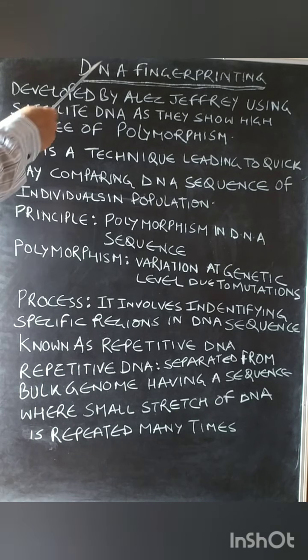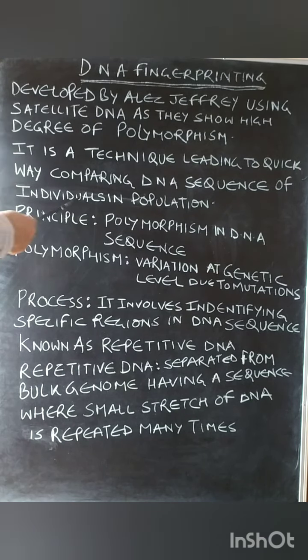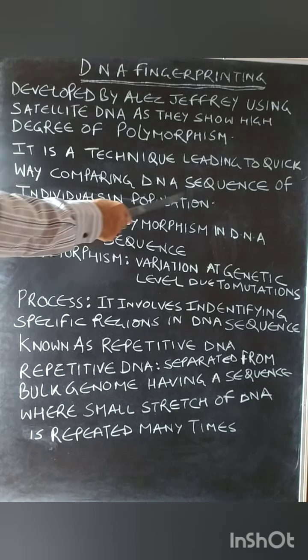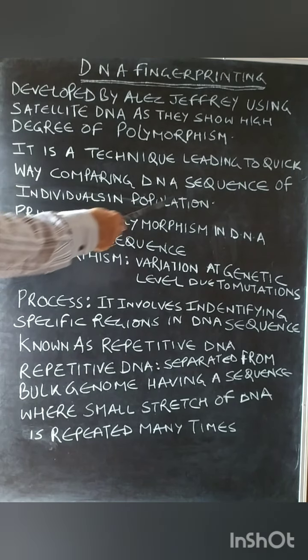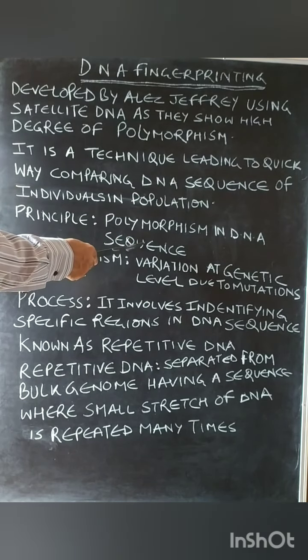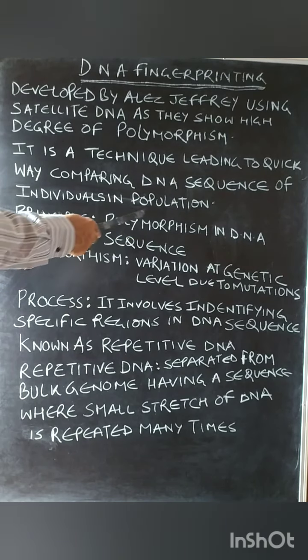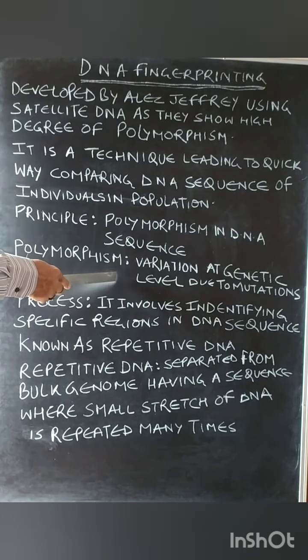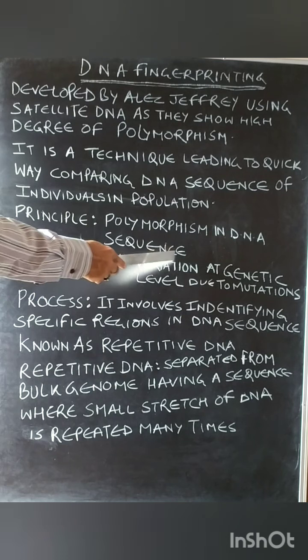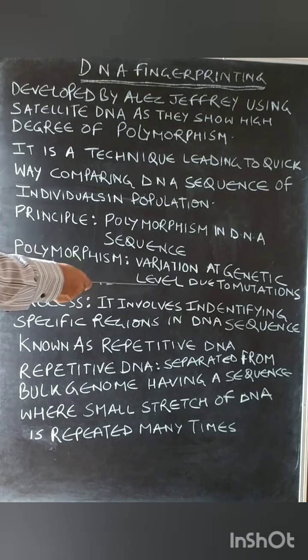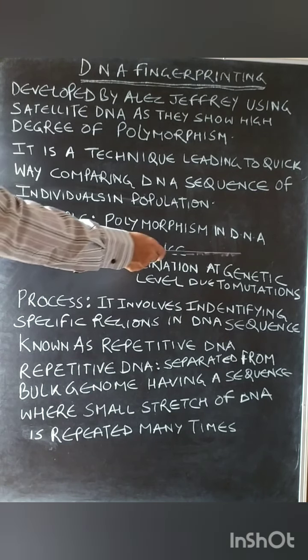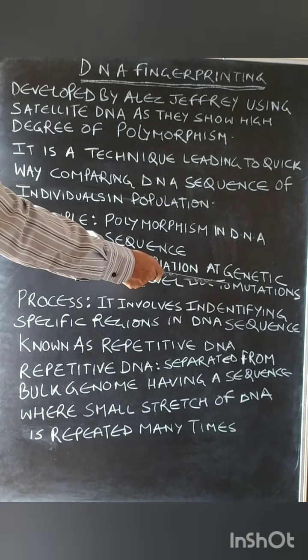DNA fingerprinting involves the principle of polymorphism in DNA sequence. Polymorphism is variation at the genetic level due to mutation.